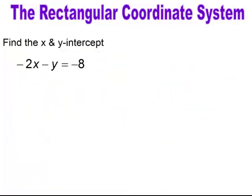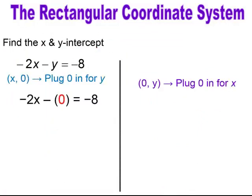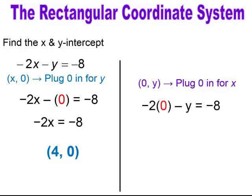Pause and try. For the X-intercept, plug in 0 for Y — you get negative 2X equals negative 8, giving ordered pair (4, 0). For the Y-intercept, plug in 0 for X — you're left with negative Y equals negative 8, giving Y equals positive 8, and the ordered pair is (0, 8). Please remember to write your intercepts as ordered pairs.